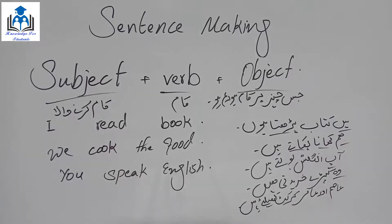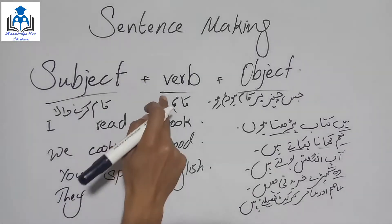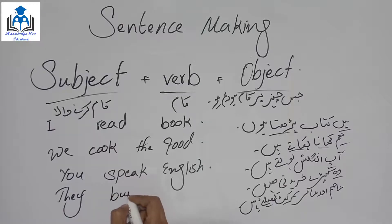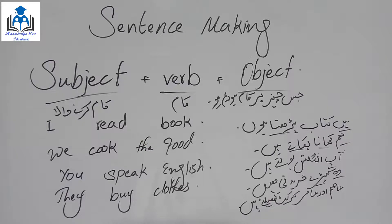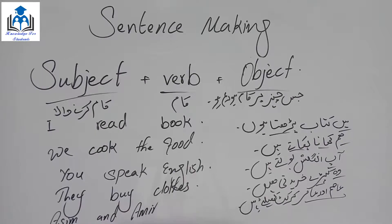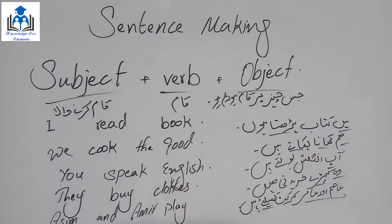'وہ کپڑے خریدتی ہیں' (They buy clothes). They are multiple ladies/girls, so 'وہ' = 'they'. What do they do? 'خریدتی ہیں' = 'buy'. What do they buy? 'کپڑے' (clothes). So → They buy clothes. Next: subject first, then action 'کھیلتے' = 'play', then object 'cricket'.